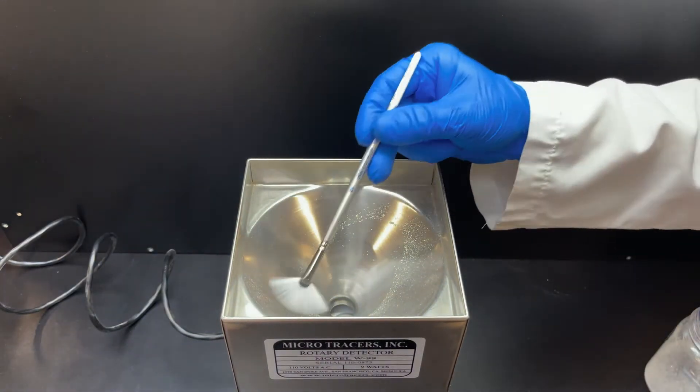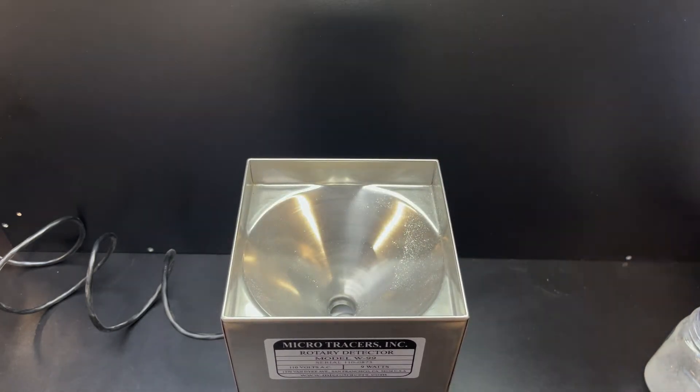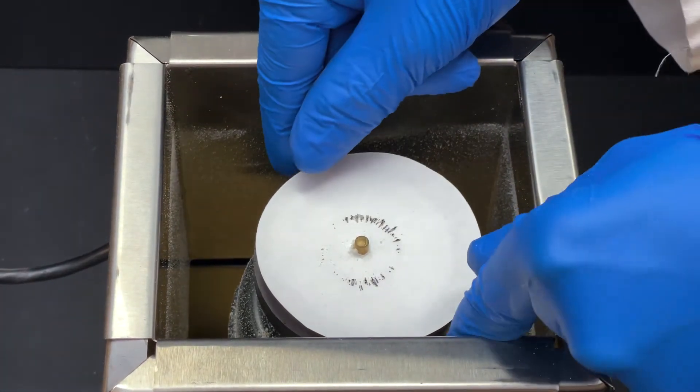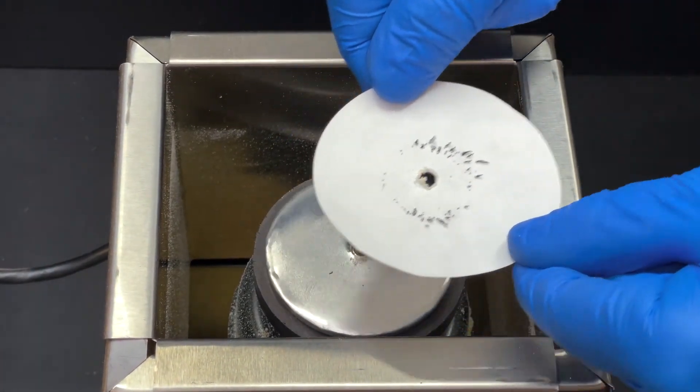After the sample has completely passed the rotating magnet, turn off the rotary detector and remove the upper hopper. After the magnet stops spinning, carefully remove the filter paper.